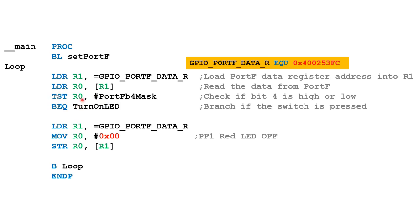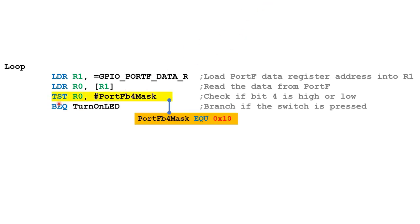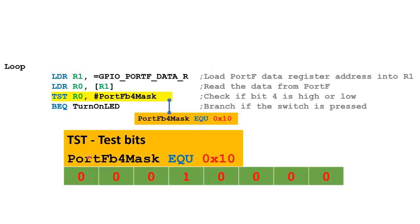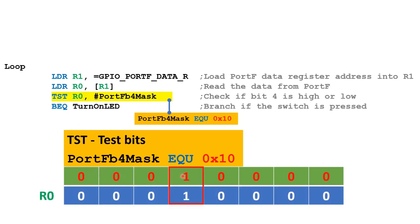TST R0, #port_fb4_mask — this mask was defined earlier with the hex value 0x10. TST stands for 'test bits.' This instruction takes the hex value 0x10, translates it to binary to form the mask, and performs an AND operation with the contents of R0.